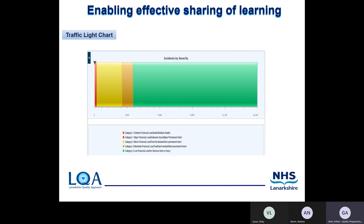The other chart is the traffic light chart. The example here is based on severity of incidents — category 1s, 2s, and 3s. What we'd expect to see is the majority of incidents as cat 3s, shown in green. But if the chart started showing a large section in red representing category 1s, that would highlight a concern. The gauge and traffic light charts are probably not as popular as the others, but they're another visual aid to display your data.